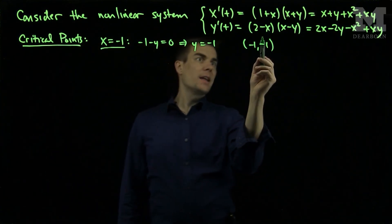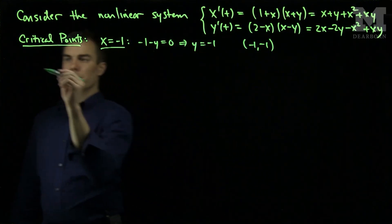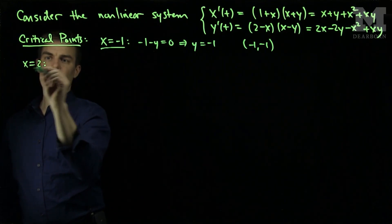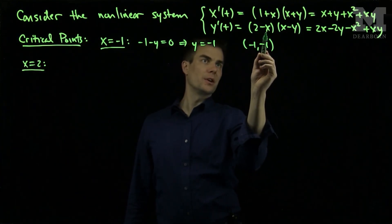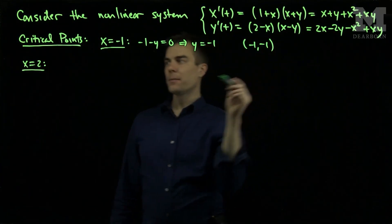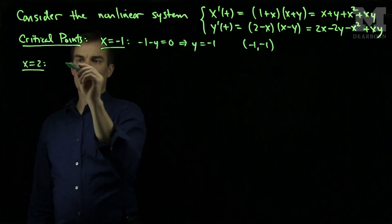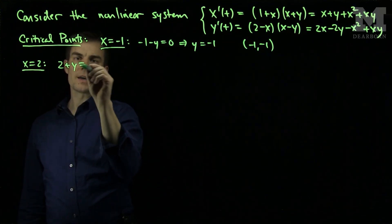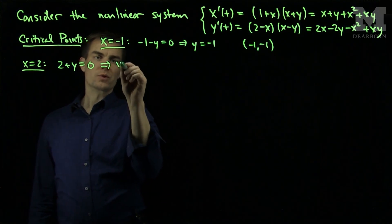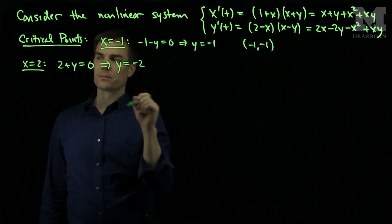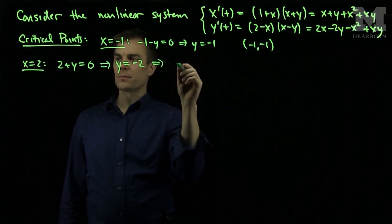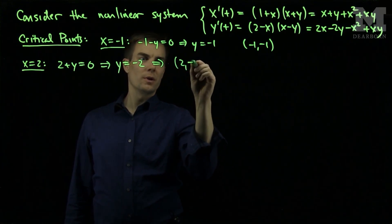Next, I can have x equals 2, and that will make my second equation equal to zero and this equal to 3. And then the first equation will become 2 plus y equals zero, which will force y to be equal to negative 2. So my next critical point will be 2, negative 2.